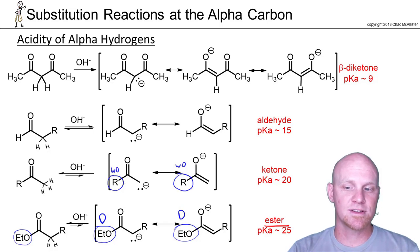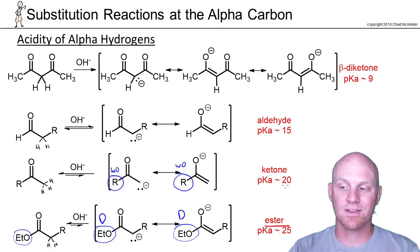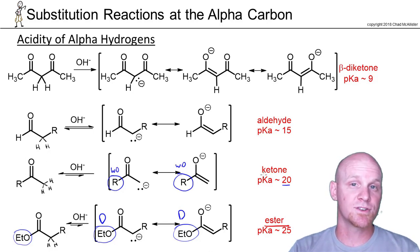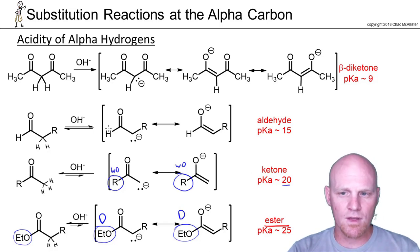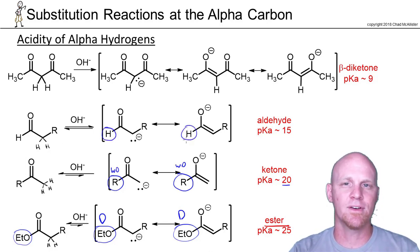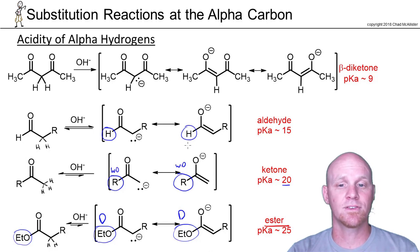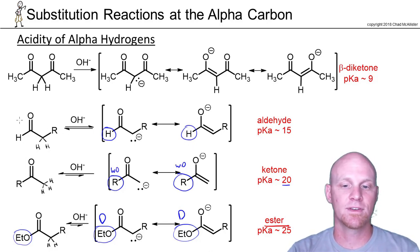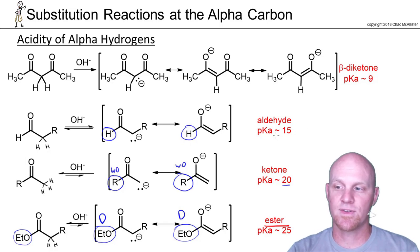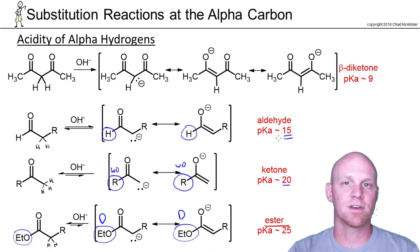Being a weak donating group, it still destabilizes the conjugate base a little bit, just not as much as the ester. So it's a slightly stronger conjugate base, meaning it came from a slightly weaker conjugate acid. The pKa is still around 20 — not a strong acid in a traditional sense, but way stronger than an alkane. For the aldehyde, there's just a hydrogen on the other side of the carbonyl, which is neither electron-donating nor electron-withdrawing. So the enolate conjugate base is more stable than for the ketone or ester, making aldehyde alpha hydrogens more acidic — with a pKa around 15.